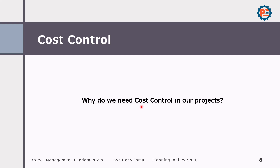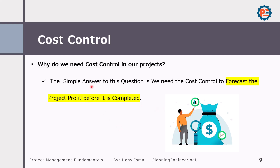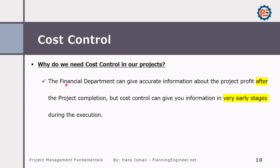Why do we need to make cost control in our projects? The simple answer is we need cost control to forecast the project profit before it is completed. Before the cost control concept, the financial department could only give accurate information about project profit after the project was completed. Since this is not aligned with the proactive concept of project management, cost control gives us this information at very early stages during execution.